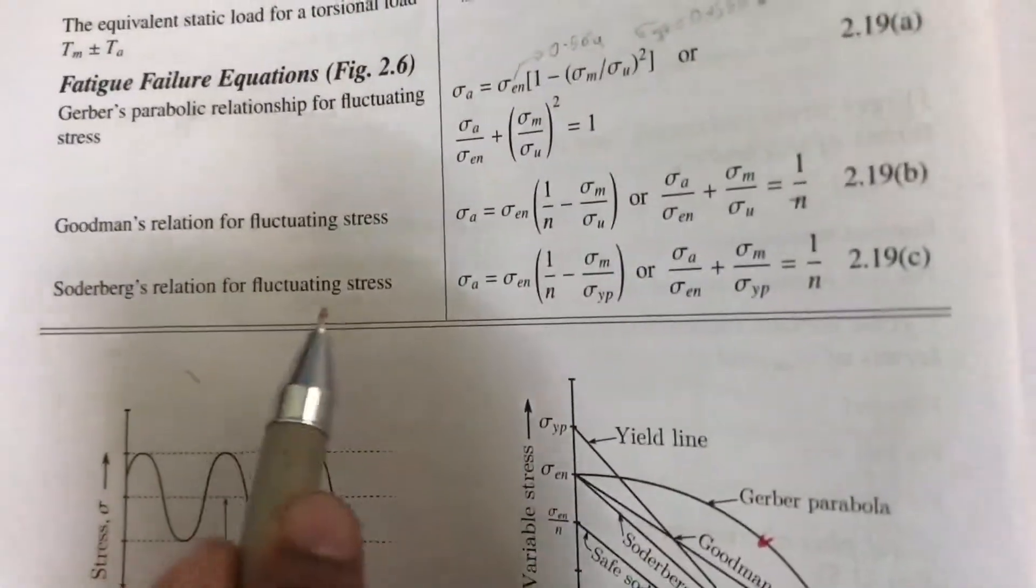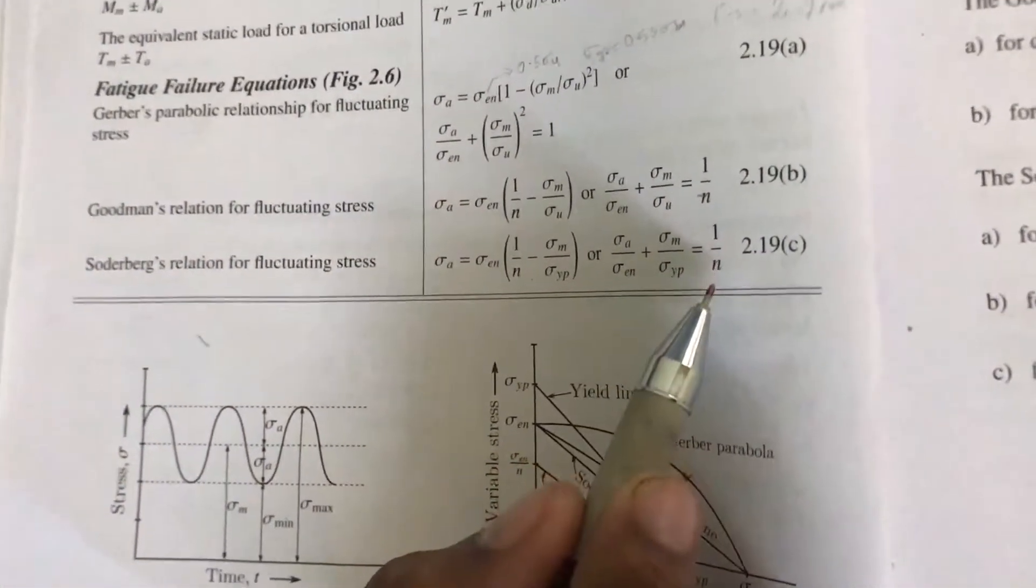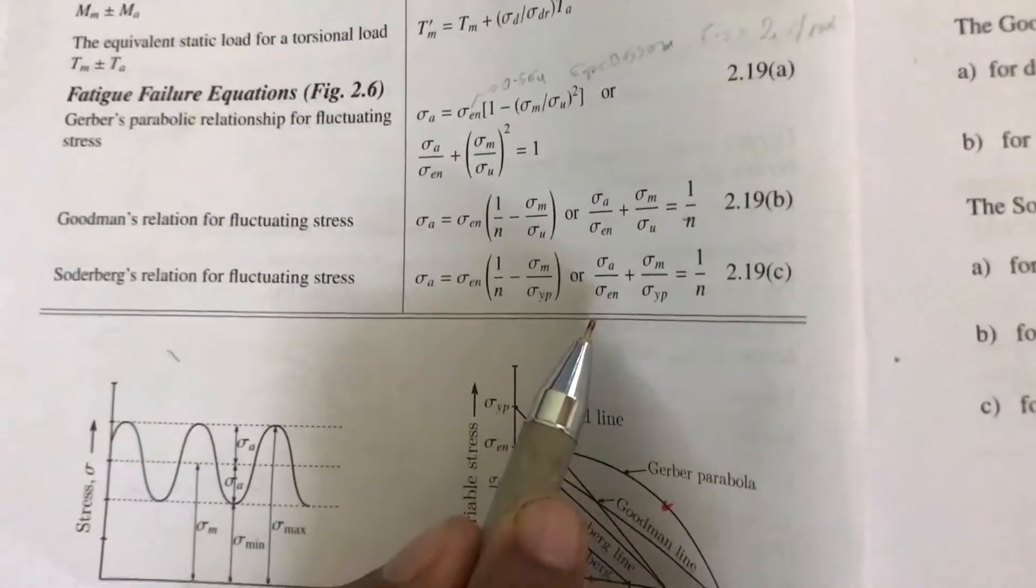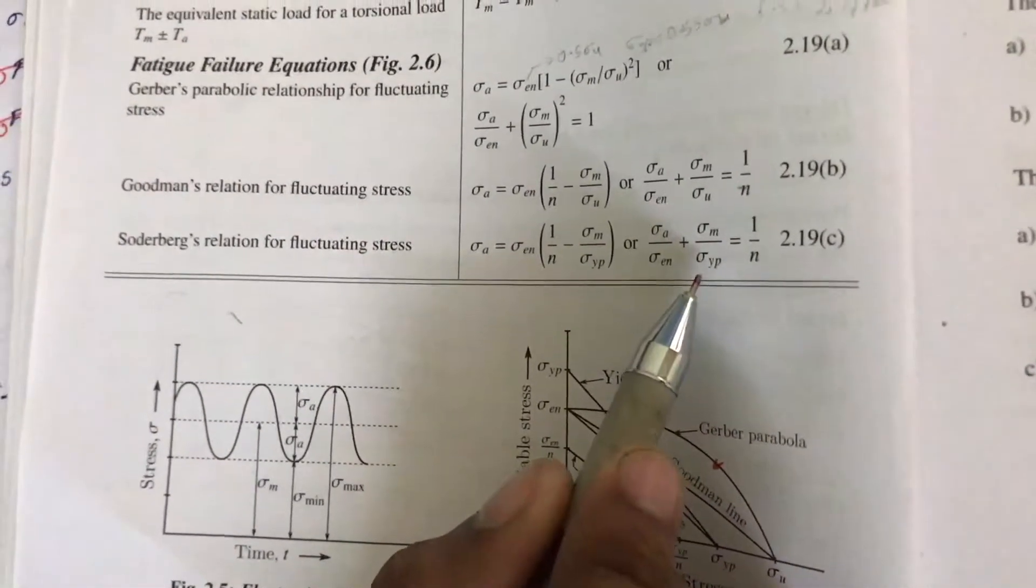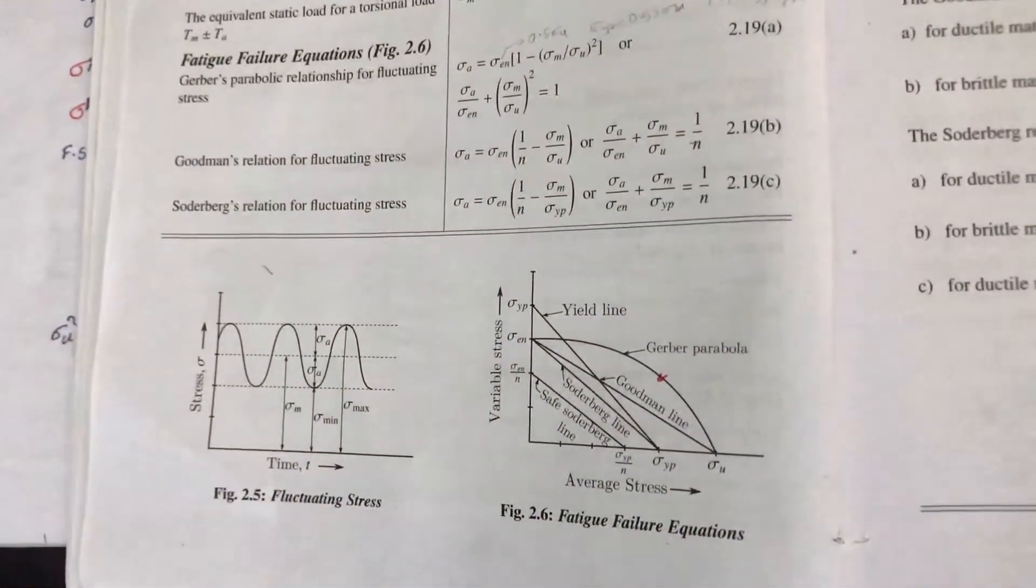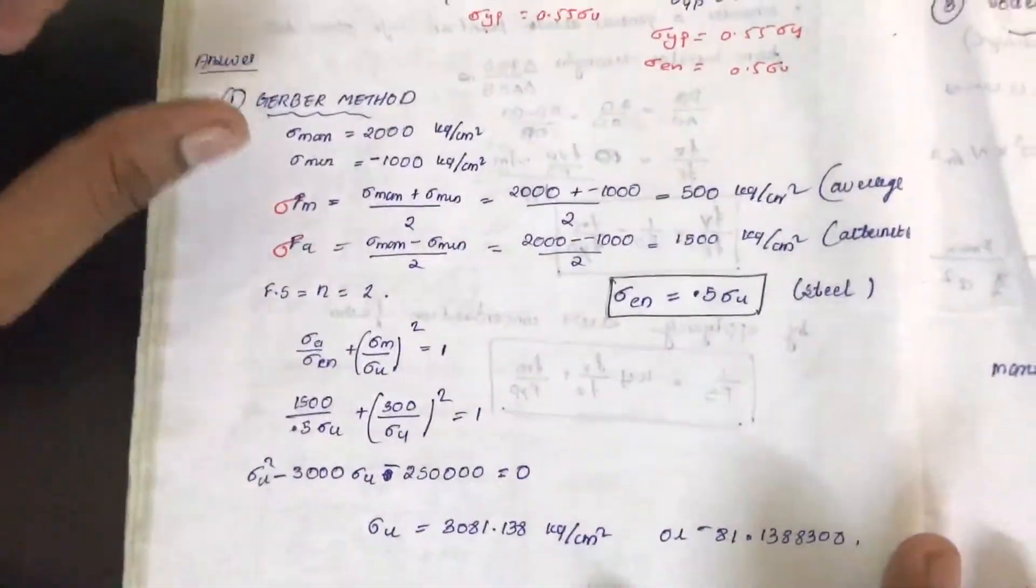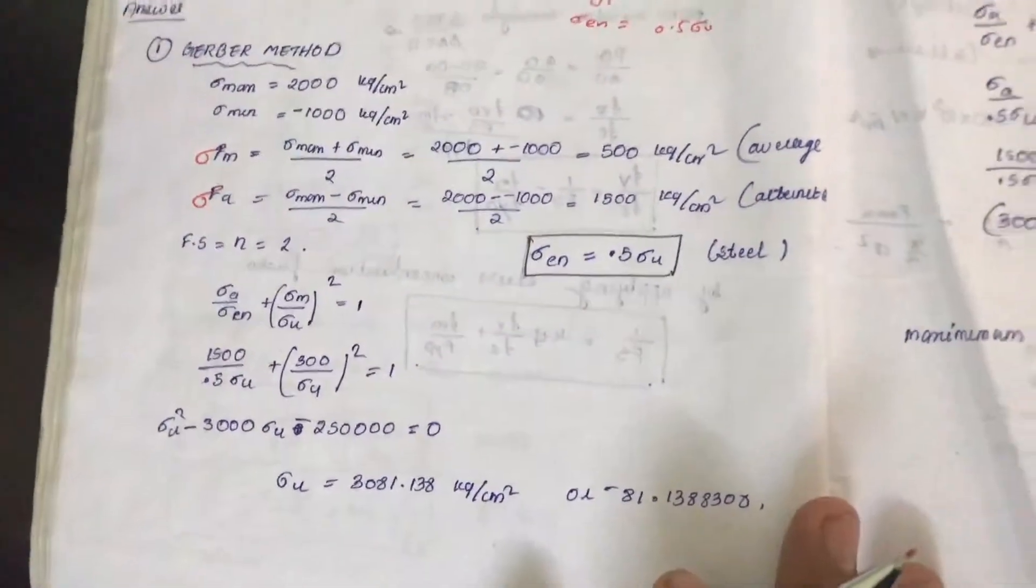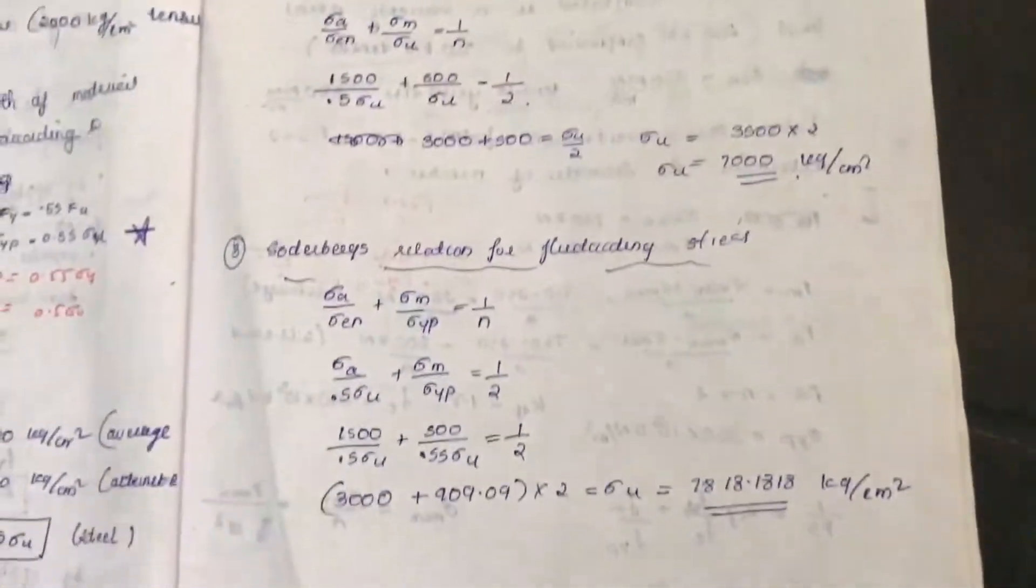Now for Soderberg relation, again sigma a by sigma yp plus sigma m by sigma u equal to 1 by n. Here sigma en equals 0.5 sigma u, sigma yp is 0.55 sigma u. We will substitute those values and we will get sigma u. N is factor of safety. This is how we use these formulas to find the ultimate stress sigma u for the given material.